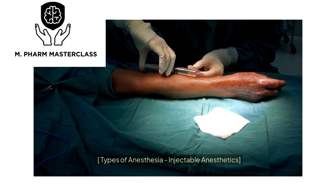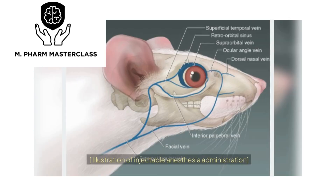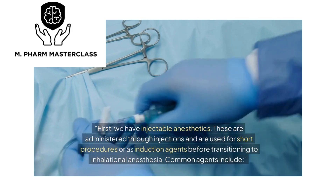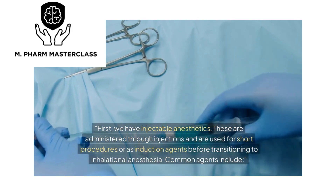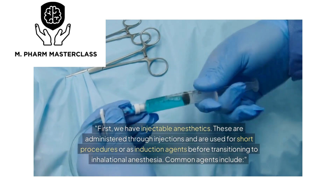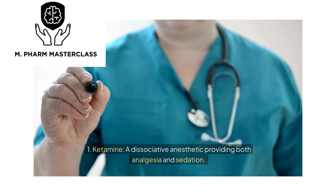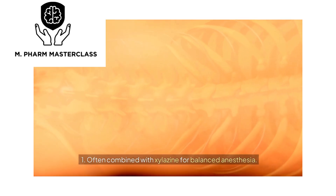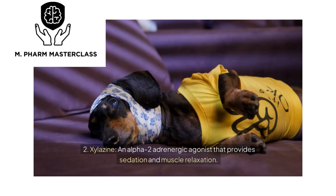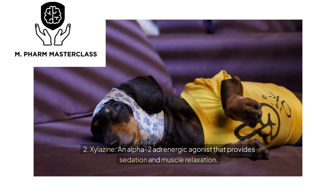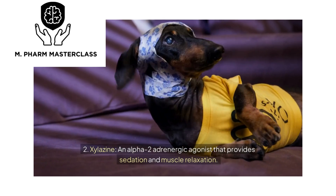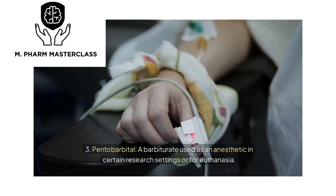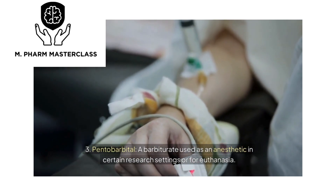First, we have injectable anesthetics. These are administered through injections and are used for short procedures or as induction agents before transitioning to inhalational anesthesia. Common agents include: ketamine, a dissociative anesthetic providing both analgesia and sedation, often combined with xylazine for balanced anesthesia; xylazine, an alpha-2-adrenergic agonist that provides sedation and muscle relaxation, which enhances the effects of ketamine; and pentobarbital, a barbiturate used as an anesthetic in certain research settings or for euthanasia.